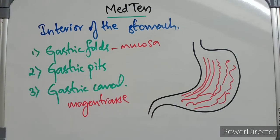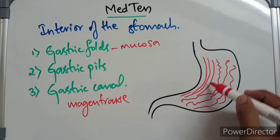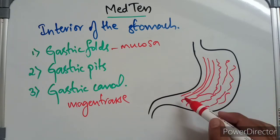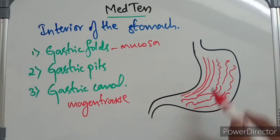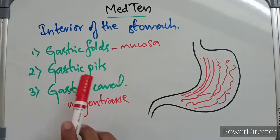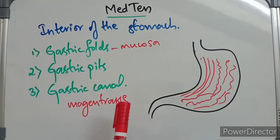Generally, if you swallow quick foods or liquids, the liquid will tend to come and lie along the gastric canal on the lesser curvature of the stomach. So this lesser curvature of the stomach is more prone to ulceration. Coming to gastric pits - gastric pits are nothing but deep pits inside the stomach where gastric glands are situated.